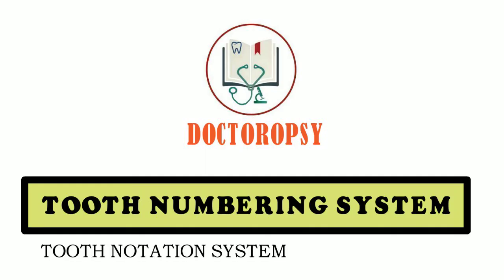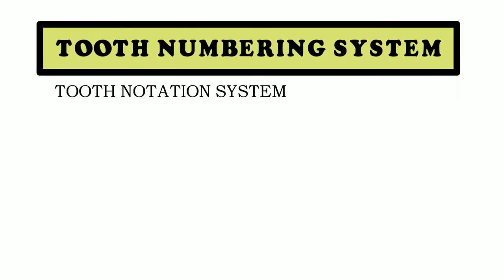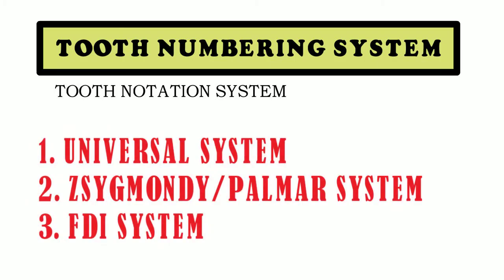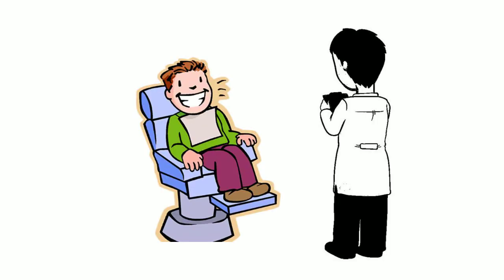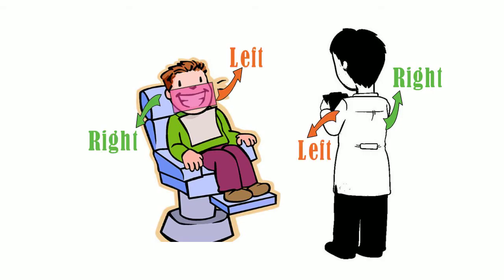Tooth numbering system is a system of numbers or alphabets given to each tooth for easy and quick communication. In all these systems, it is important to note that they are always done in view of the dentist looking at the jaws of the patient in front. So the dentist's right is patient's left and dentist's left is patient's right. Therefore, while designating the tooth numbers, never do it on your own jaw but imagine it on a person in front of you.